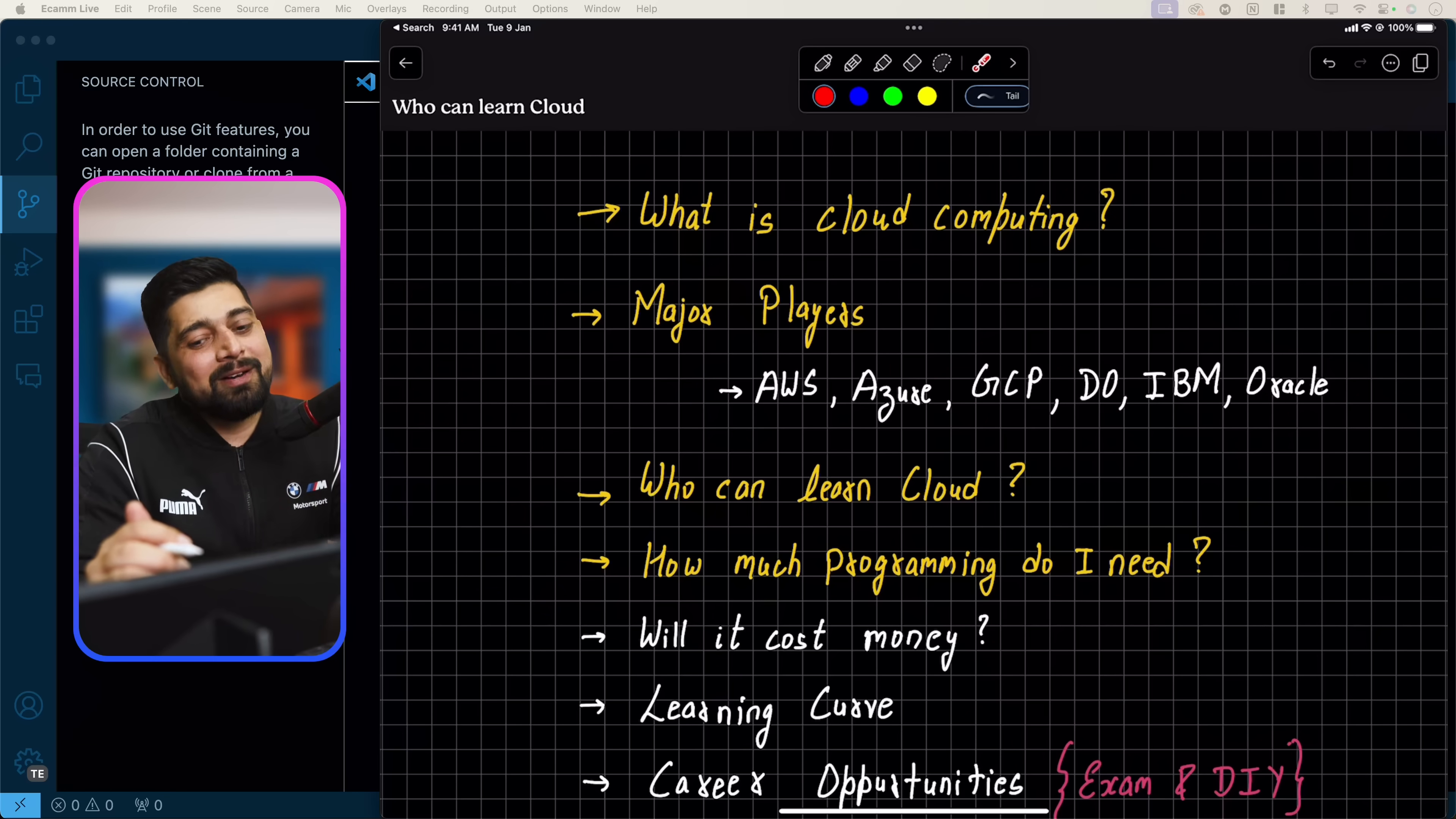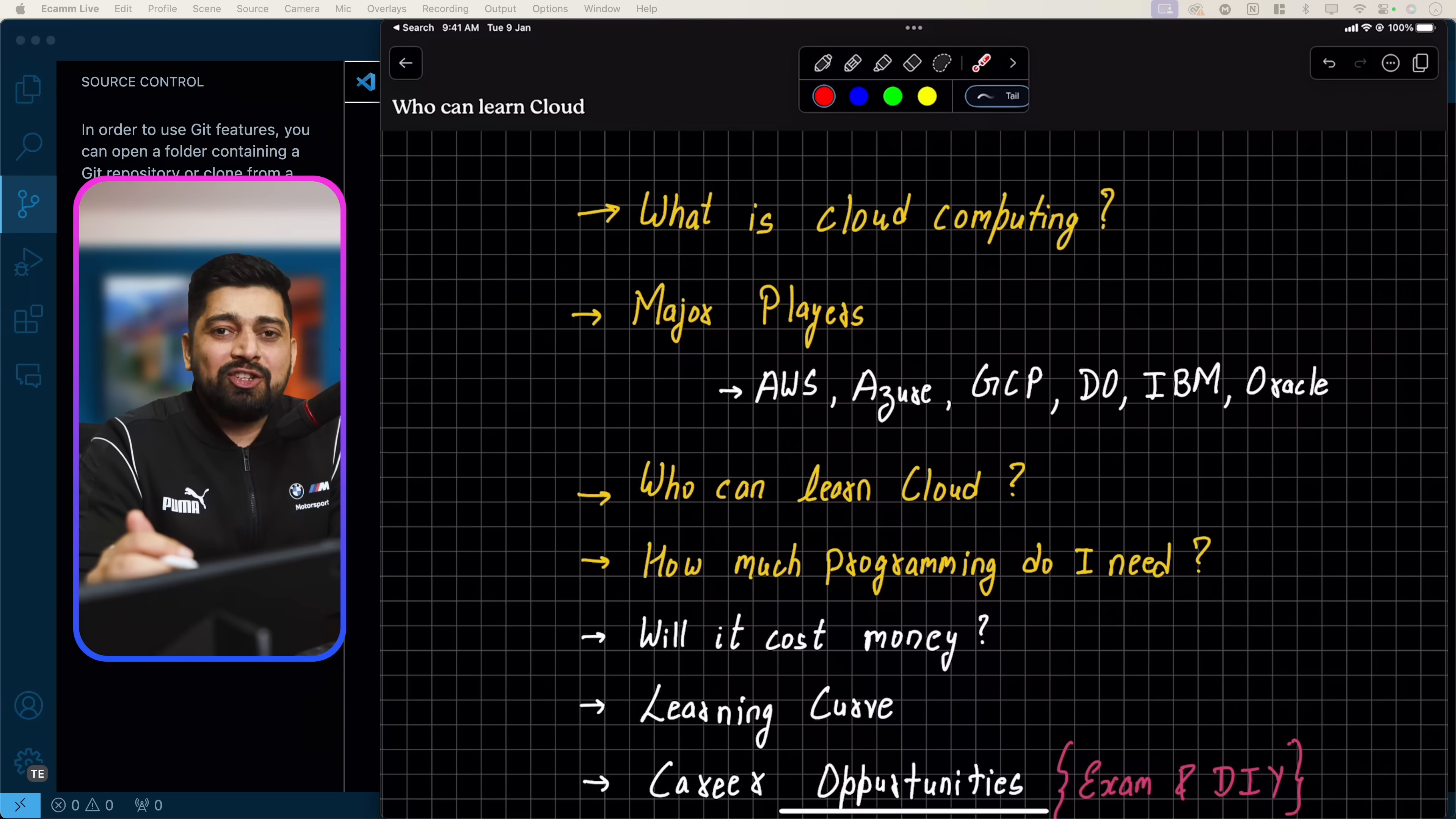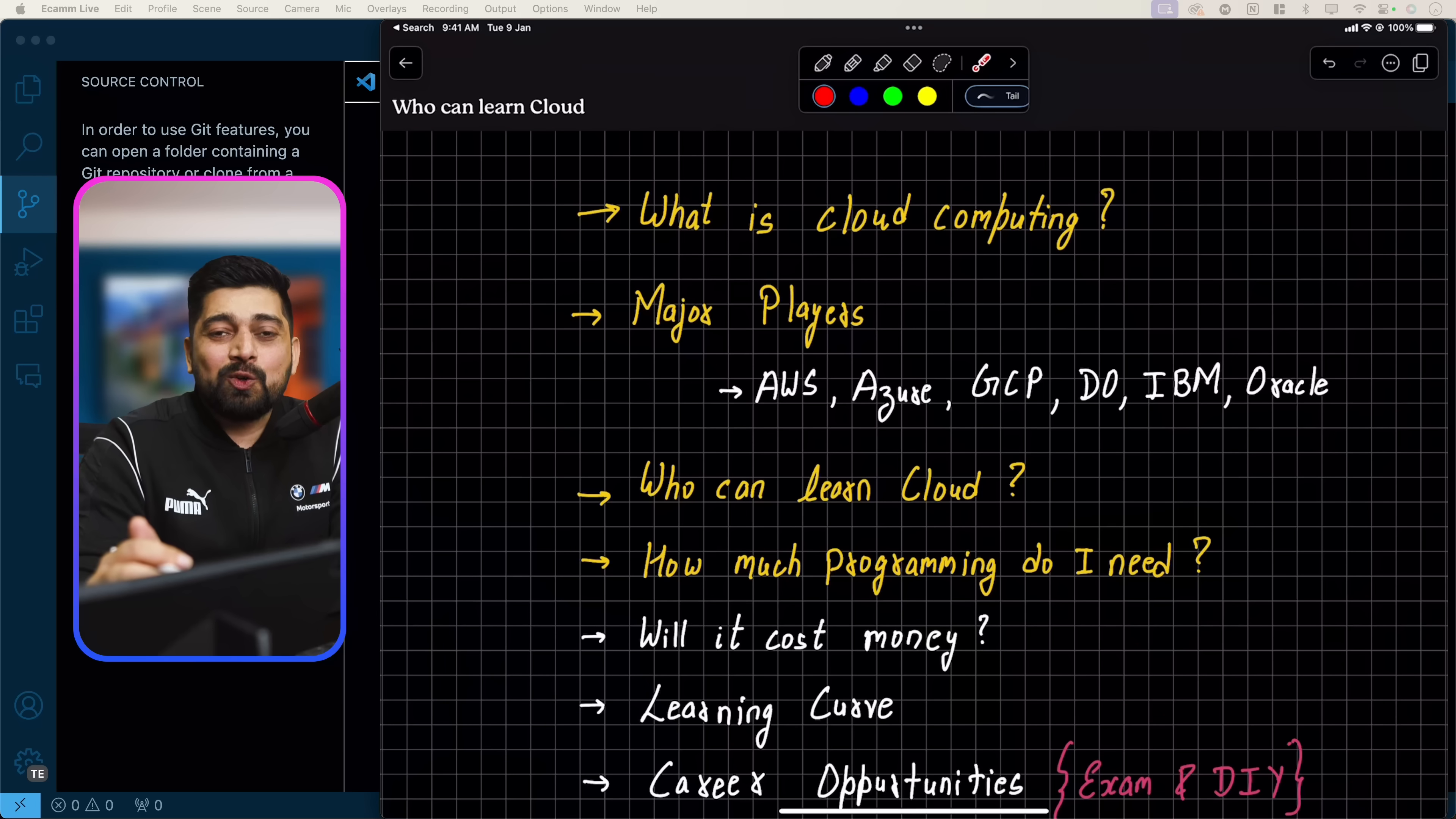Now that somebody might be Jeff Bezos from AWS or might be somebody else, but it's all about handling somebody's computer. The better you are handling somebody's computer, that's what cloud computing is. Cloud computing gives you the ability to have almost unlimited resources—you want 10 GB of RAM or 100 GB of RAM, it's just a click of a button. You want storage of 1 TB or 1 petabyte, it's just a click of a button.